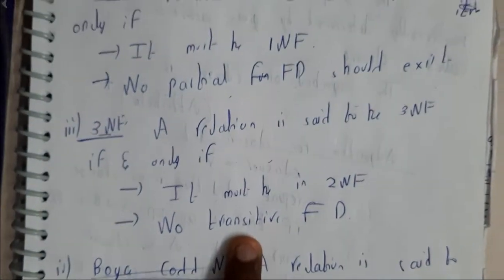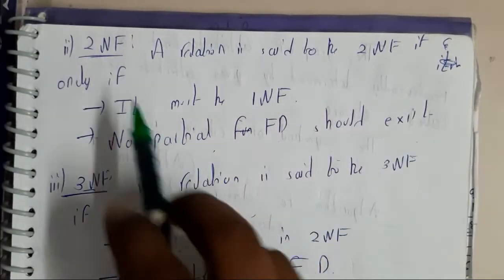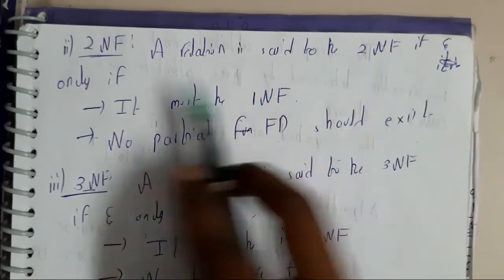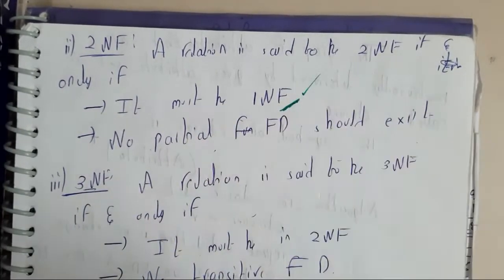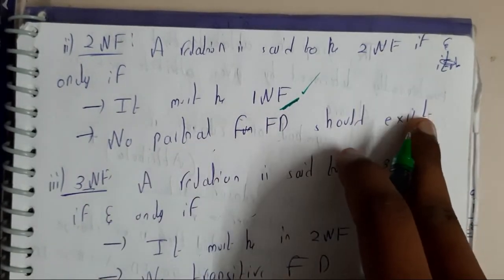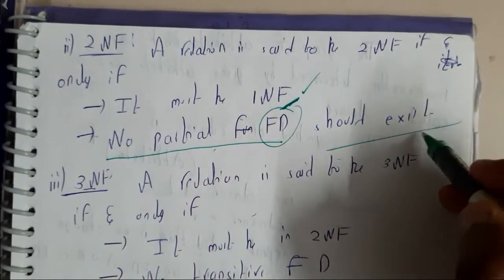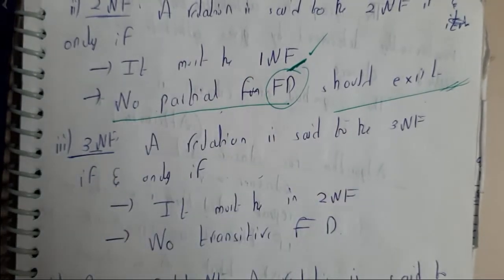Now let us go through second normal form. Initially let us go through the theory, after that we will be going through problems. A relation is said to be in second normal form if and only if it is in first normal form. Basically it should be in first normal form. After that no partial FD should exist, no partial functional dependency should exist.